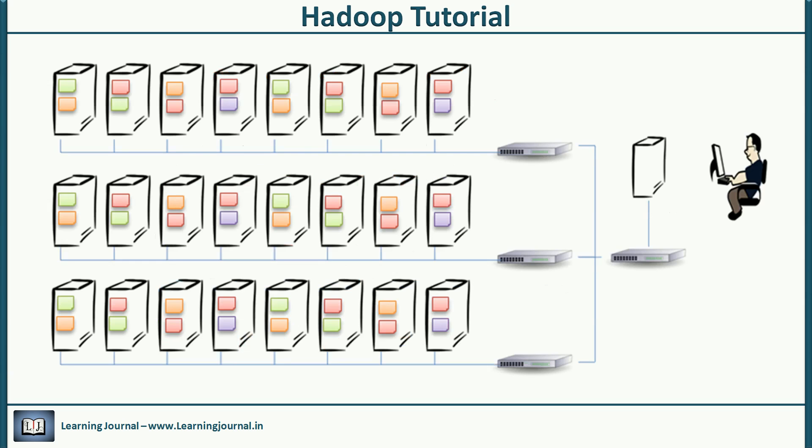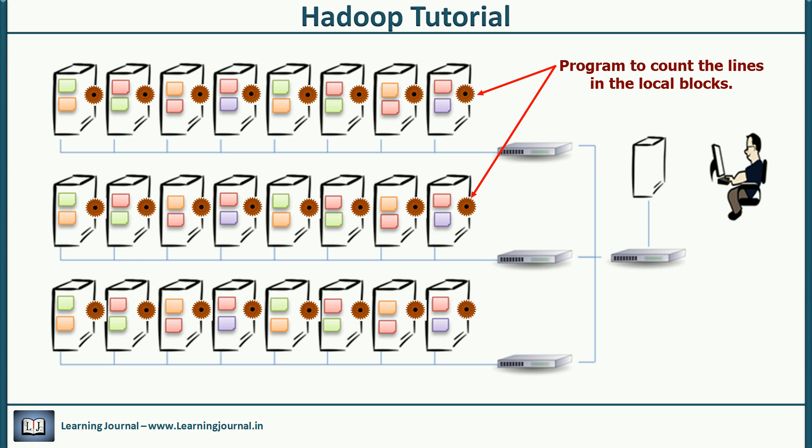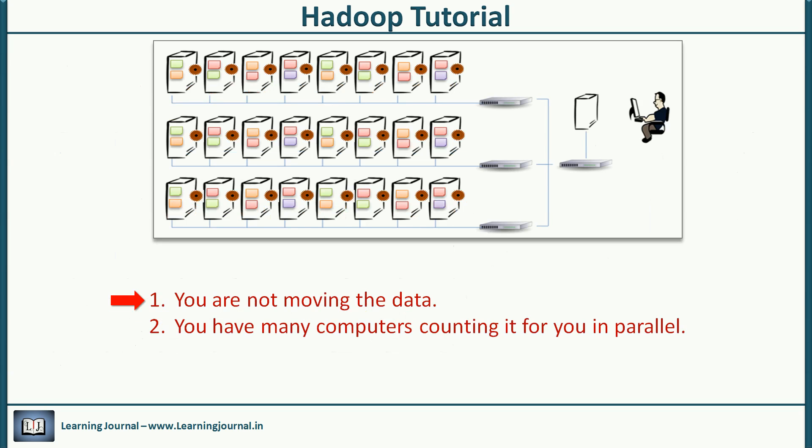The creators of Hadoop realized this fact and solved it using an exceptionally simple mechanism. Look at your cluster. You have several computers. Many are holding some blocks of your data. Everyone has some CPU, memory, and disk capacity. Now rethink your line counting problem. What if each computer can count the lines of their local blocks? The counting of the 20 terabyte file will be over in just a few minutes. You're not moving the data, you're counting it locally. You have many computers counting in parallel. With these two improvements, your job will complete in a few minutes.